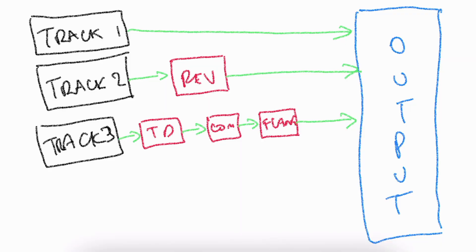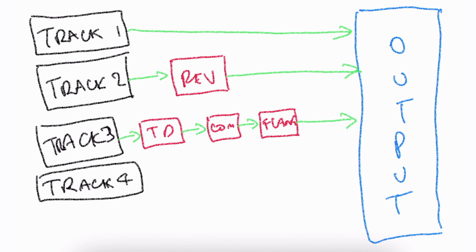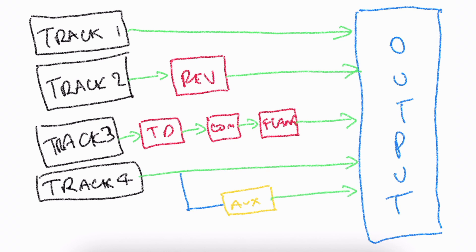Now let's suppose what I want to do with track four is something slightly different. I want the same direct connection all the way through to the output, but I also want this channel to split sideways into a different type of effect — which I'm going to refer to as an auxiliary. Working with auxiliaries is different to insert effects: auxiliaries allow me to split the signal out to a new track where I can add effects separately.